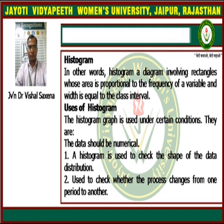We are given the histogram's definition and its uses. A histogram is a diagram involving rectangles whose area is proportional to the frequency of a variable and whose width is equal to the class interval. So a histogram is a kind of diagram which involves rectangles — its area is proportional to the frequency of the variable and the width is equal to the class interval.